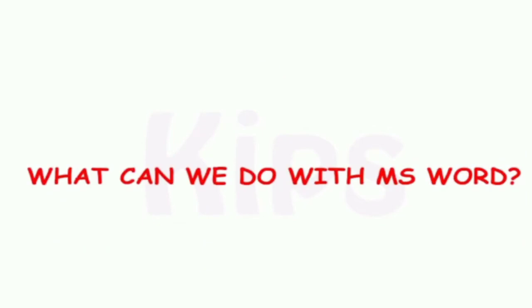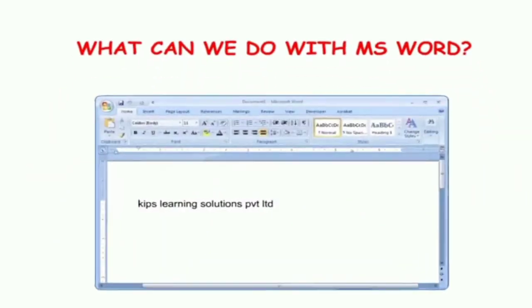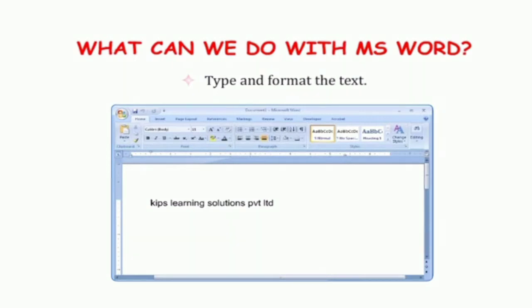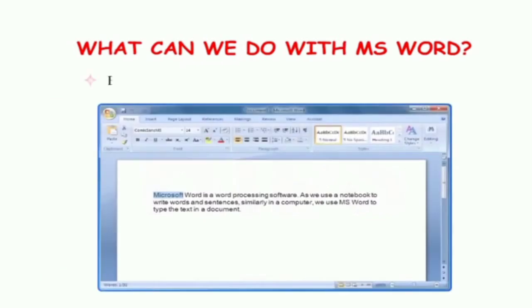What can we do with MS Word? MS Word के साथ हम क्या-क्या कर सकते हैं? We can type and format the text. हम कुछ भी typing कर सकते हैं और उसको stylish तरीके से लिख सकते हैं.